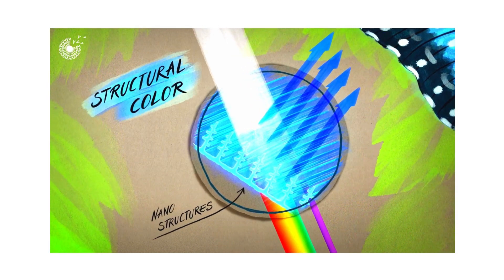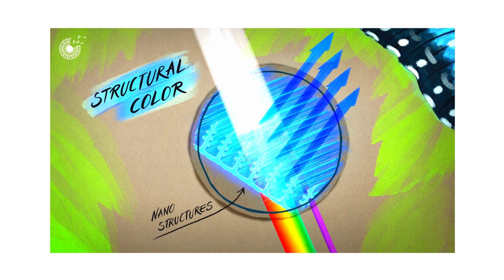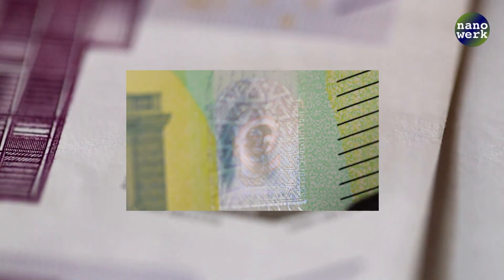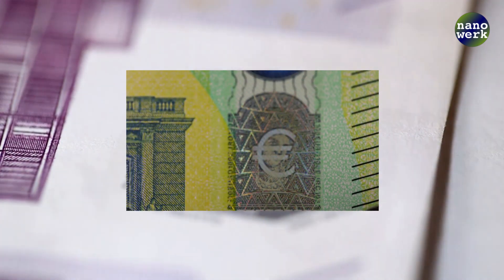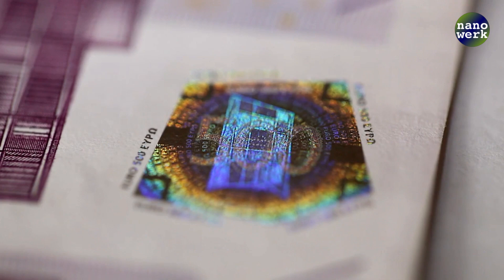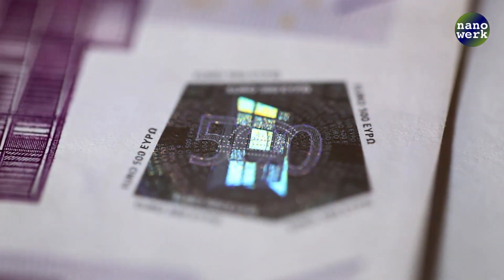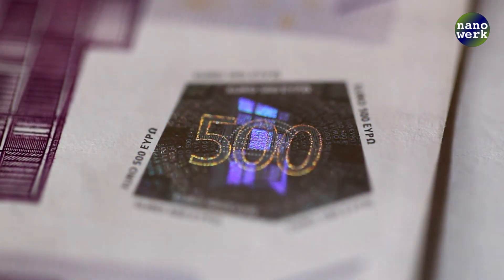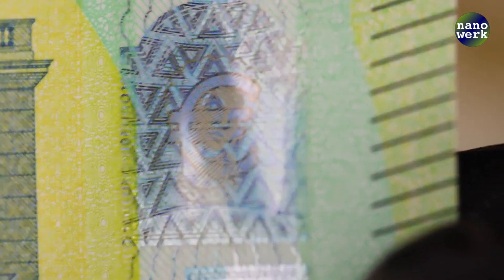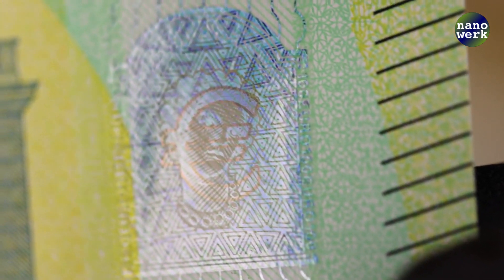This is where the physical geometry of material determines its optical properties. In technology we see a similar concept applied in the security features of banknotes. Here the principle of structural colors is harnessed through the use of nano-sized structures meticulously designed and embedded in holograms.